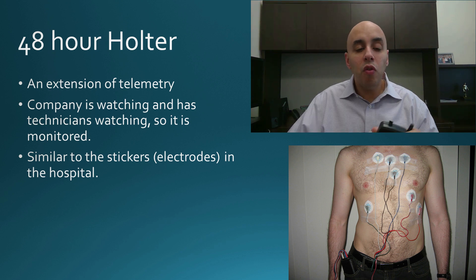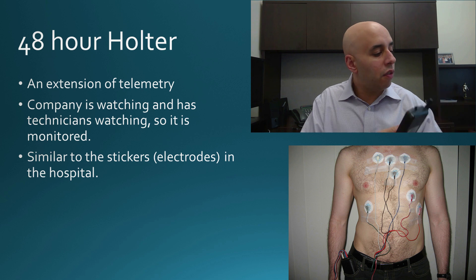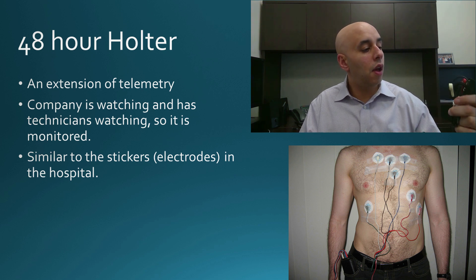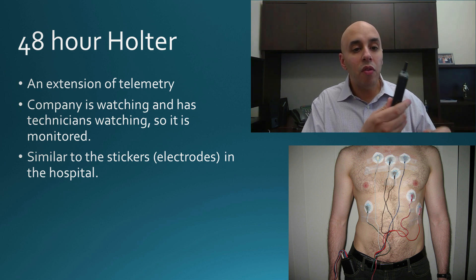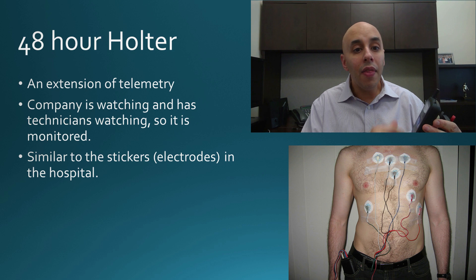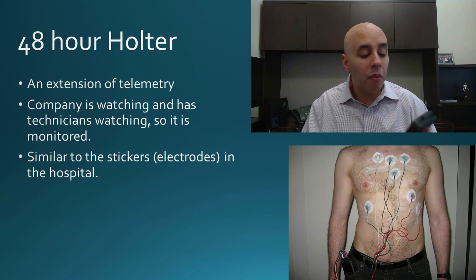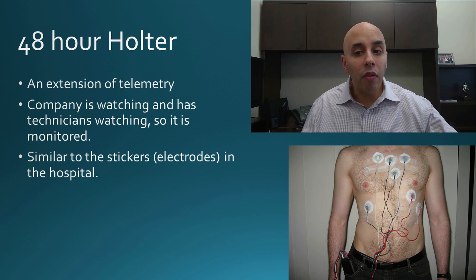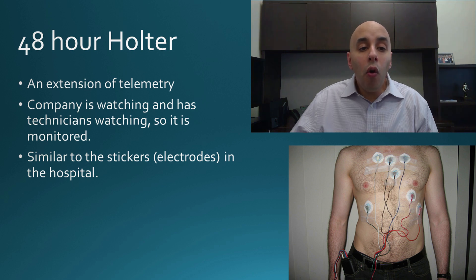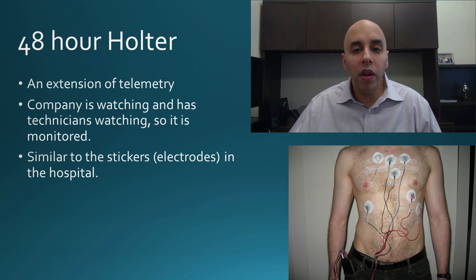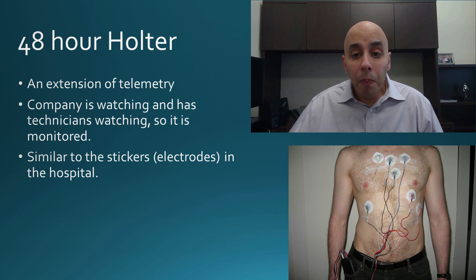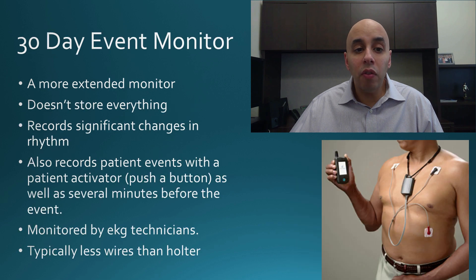The Holter monitor typically connects to a modem where you connect the wires to your chest, and that connects to a modem that has a cell phone signal, which lets us know if there are any abnormal heart rhythms. You're also able to activate it and record signals yourself. The Holter monitor is continuously recording — it covers every single beat. Some people have symptoms that come and go, not just within 48 hours.